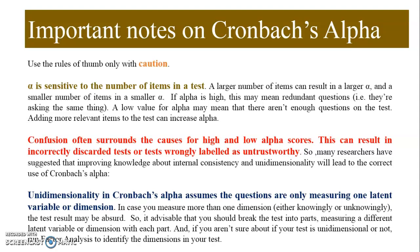Unidimensionality is one of the key assumptions of Cronbach's alpha — it means that questions should only be measuring one latent variable at a time. If you measure more than one dimension, knowingly or unknowingly, the test results can be misleading. It is advisable to break the test into parts, each measuring a different latent variable. If you are unsure whether your test is unidimensional, you can run a factor analysis to identify the dimensions. That's all from my side — please write any queries in the comment section and share with your research scholar friends.